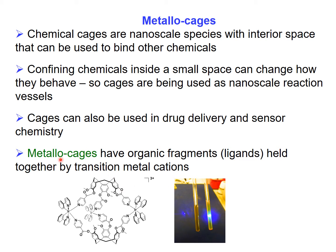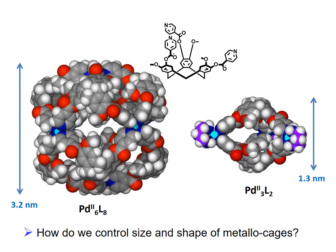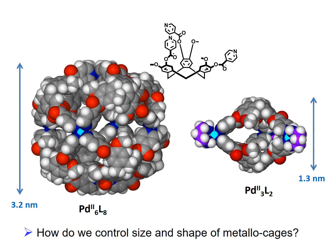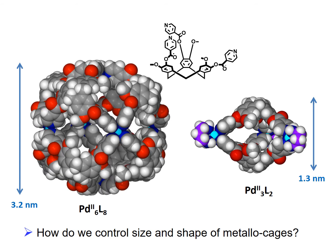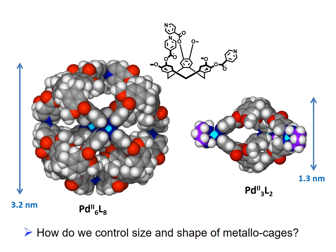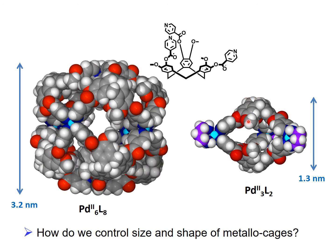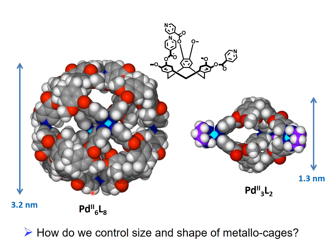A metallocage has an organic part and it's linked together by a metal — in this particular case, an iridium metal. Before you can look at applications of cages, you've got to understand how to build them: what factors there are in building them and whether you want to form a little cage like this one over here, or a big cage like the one that's rotating around.